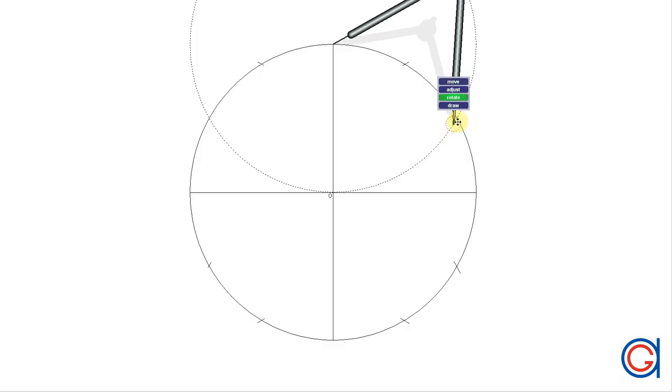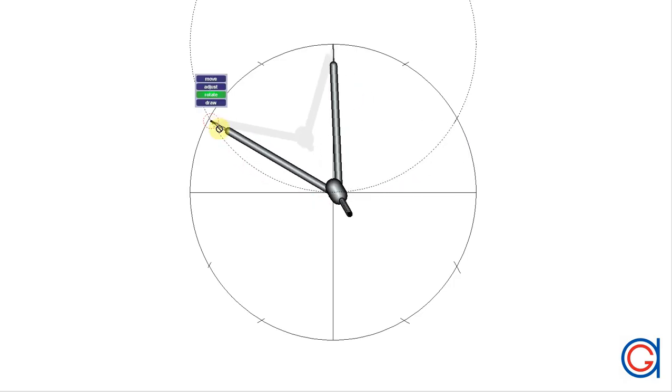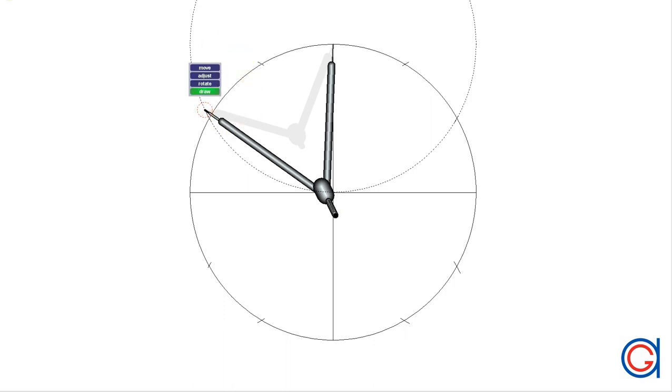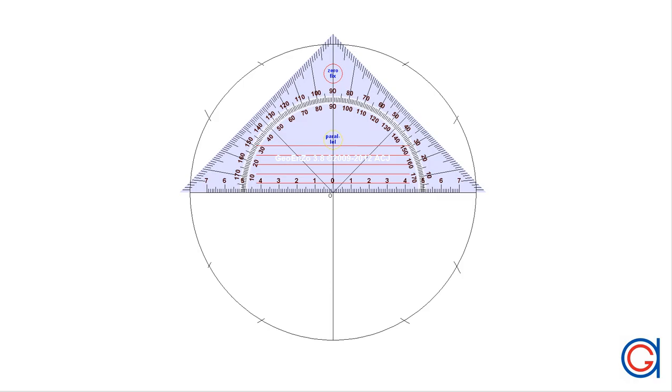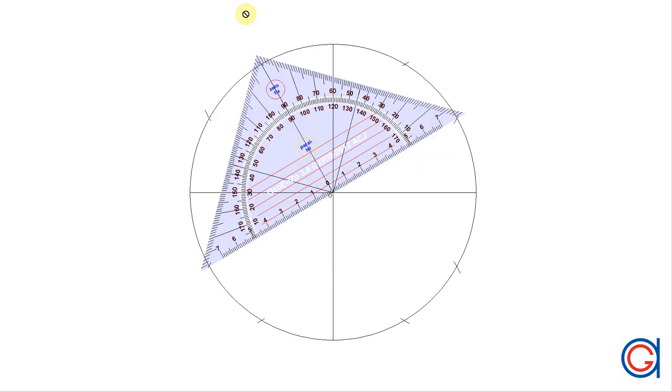So now that we have the 12 divisions of the circle, we draw diameters, joining these divisions through the center point, as can be seen here.